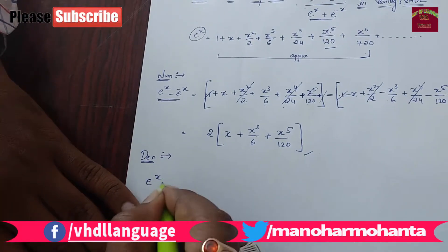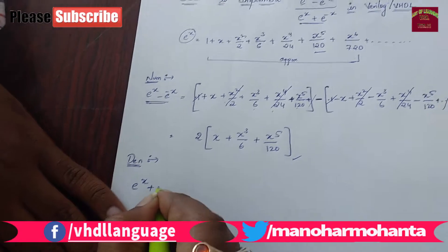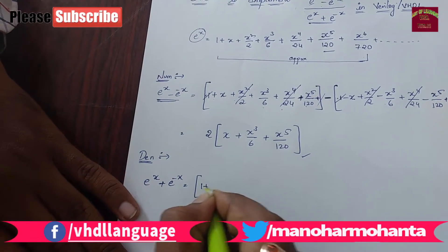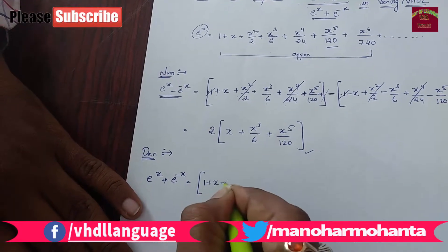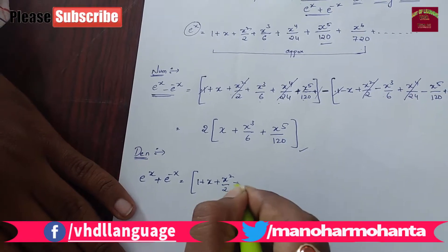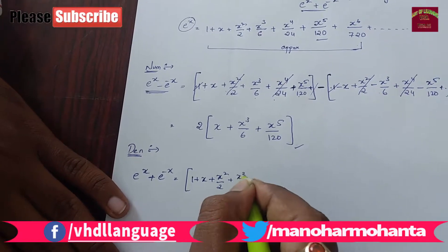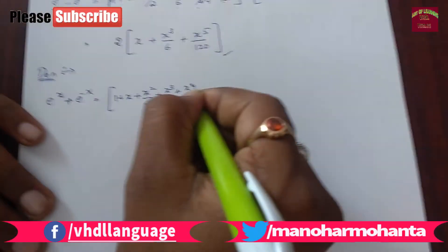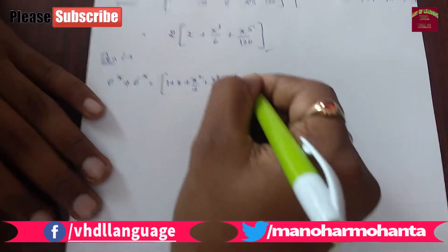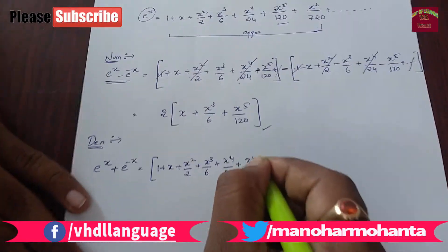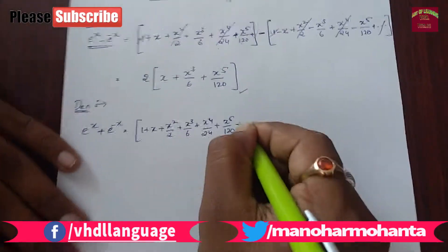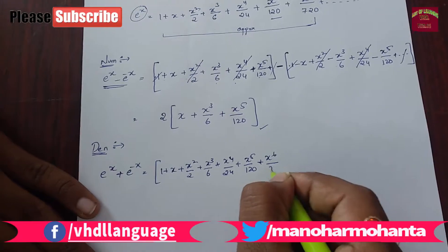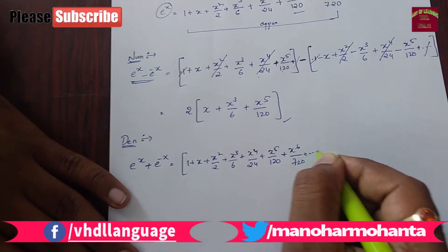Now let us discuss about the denominator part. Denominator part: if you see e power x plus e power minus x. E power x same expansion you get: x square by 2, x power 3 by 6, x power 4 by 24, x power 5 by 120 plus x power 6 by 720 plus and so on.